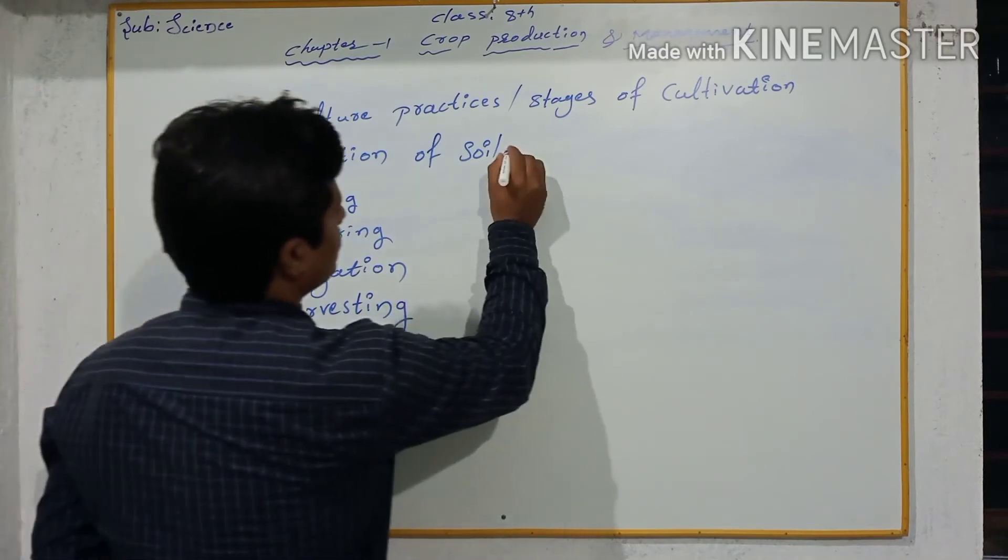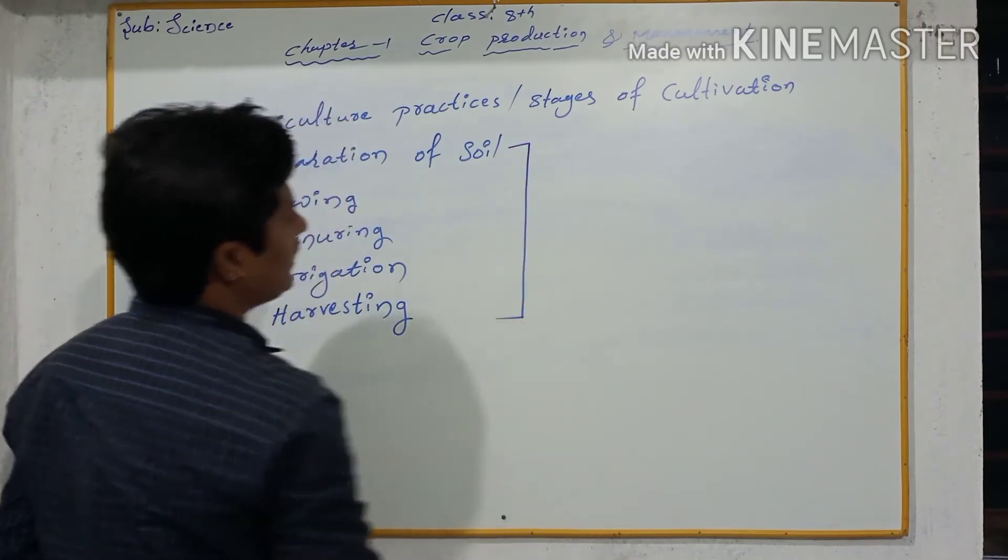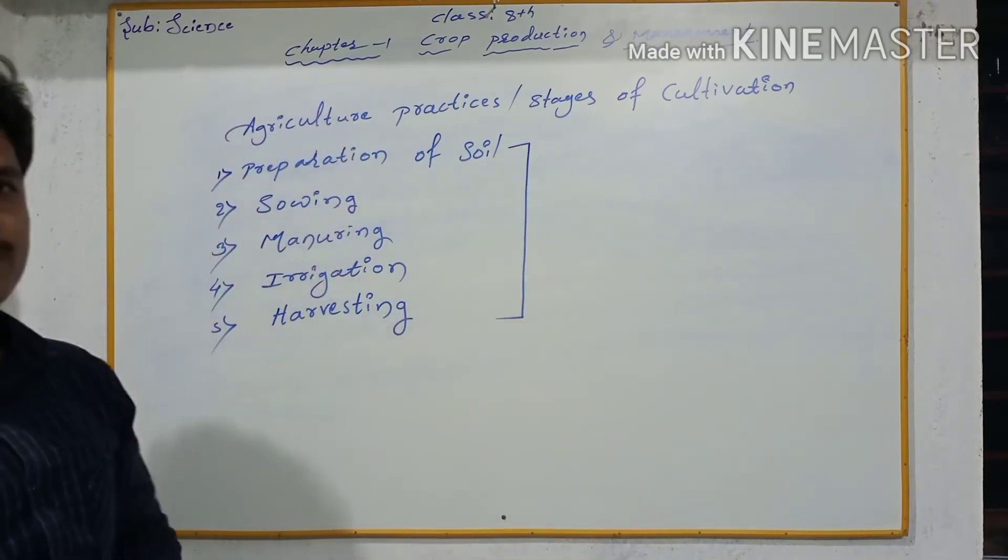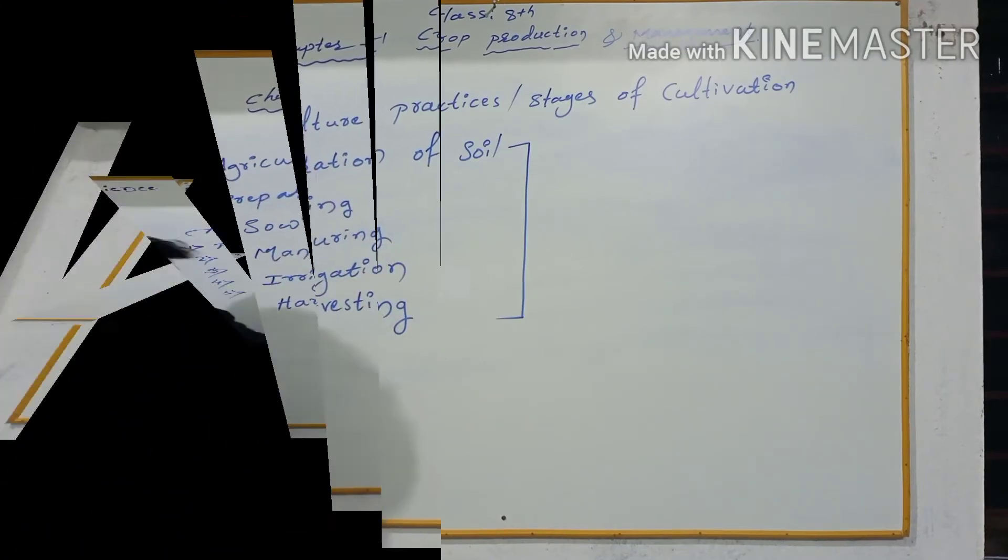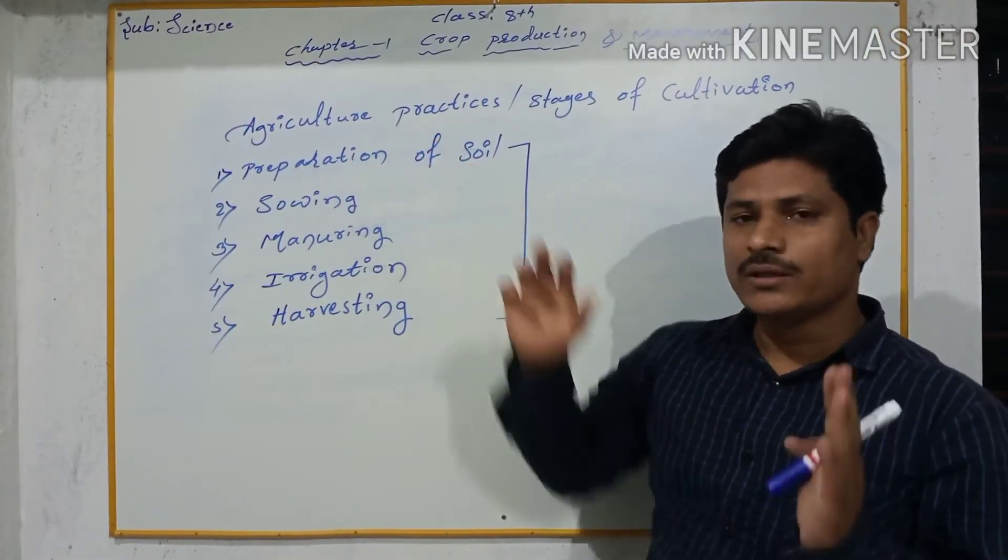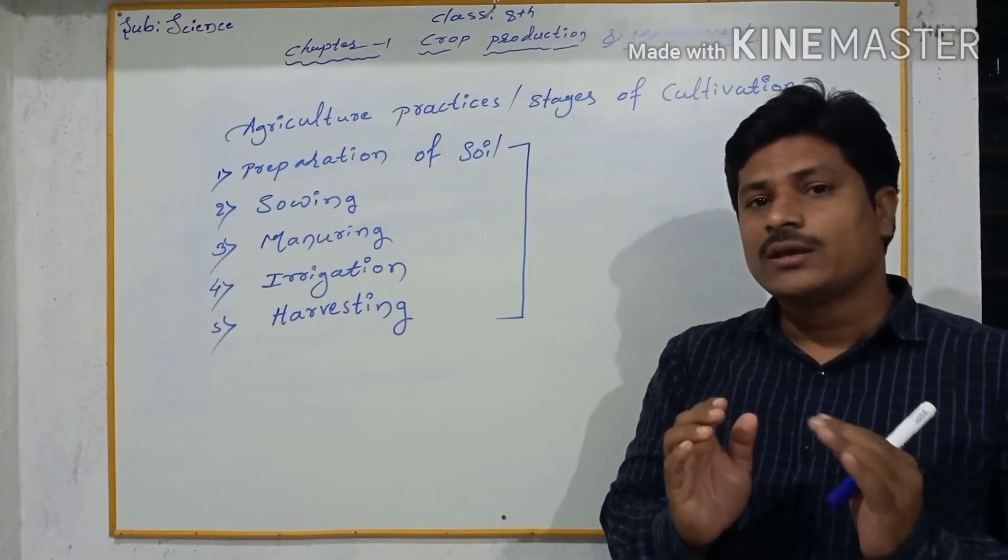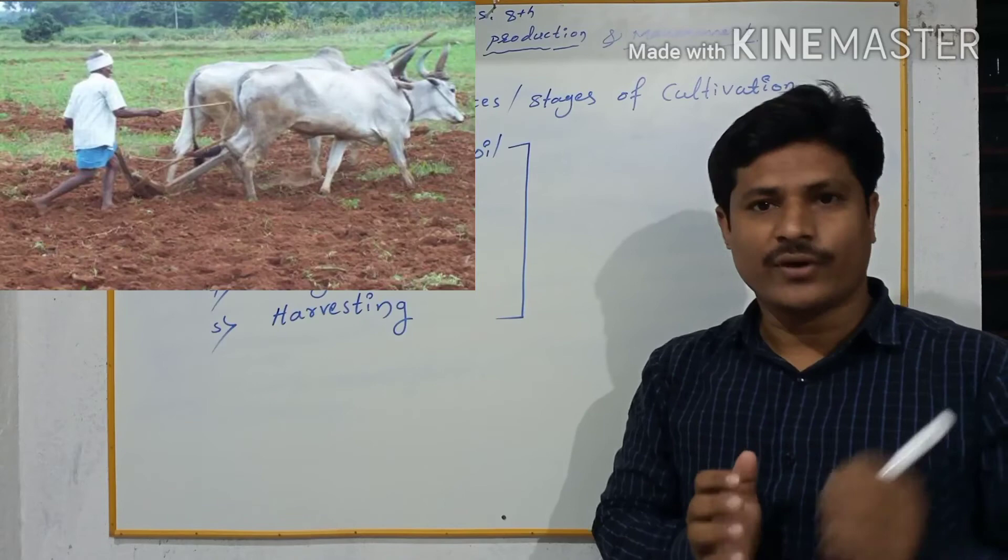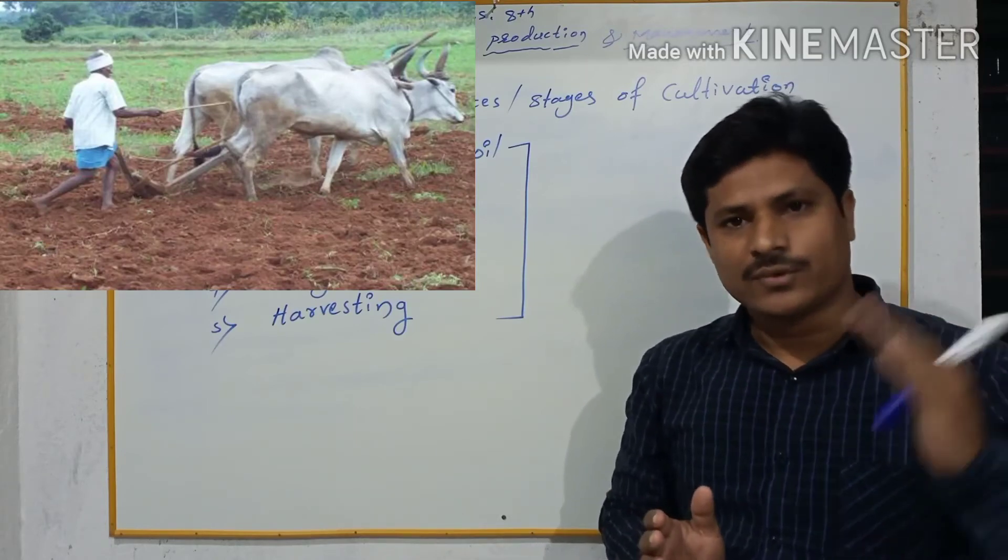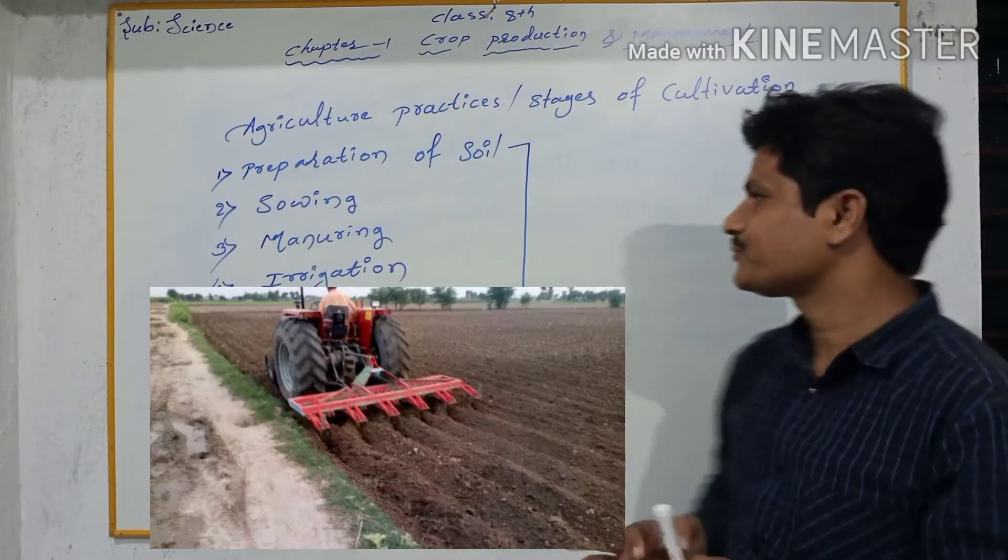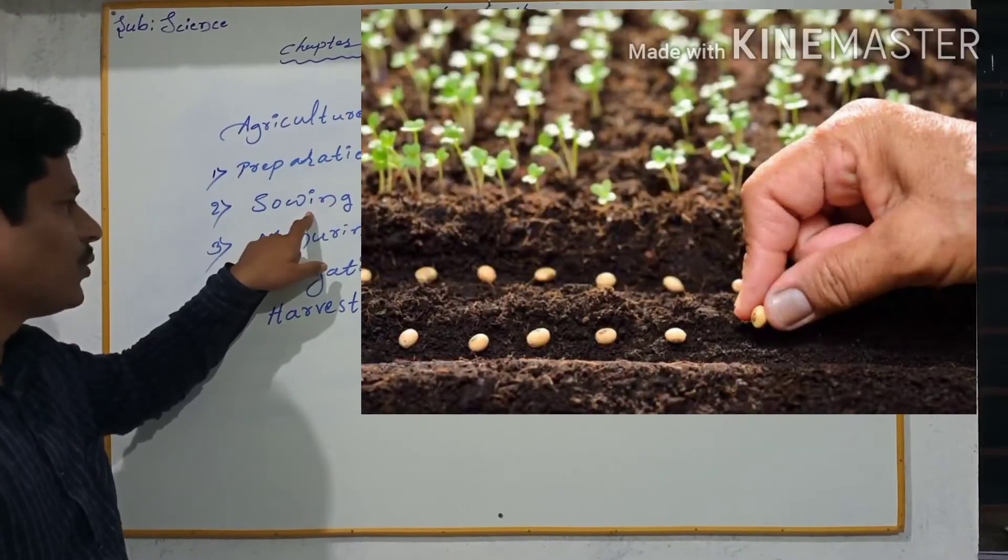So these are the steps or stages of cultivation. Let us know about them one by one. Number one, preparation of soil. This is a very important process. In this process, the soil is loosened by the farmer. It is done by either animals or by machines. Next stage is sowing.